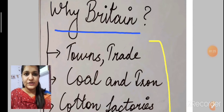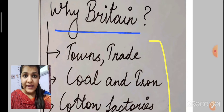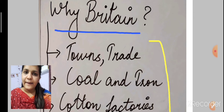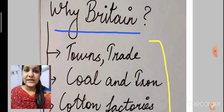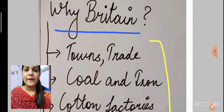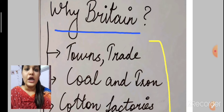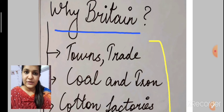The major topics of this chapter include, first, why Britain? We are going to understand why this industrial revolution happened in Britain only. The political control was very strong — we studied the unification of Britain, which was in 1707, and later on there was the formation of Great Britain, so the political stability was very strong.